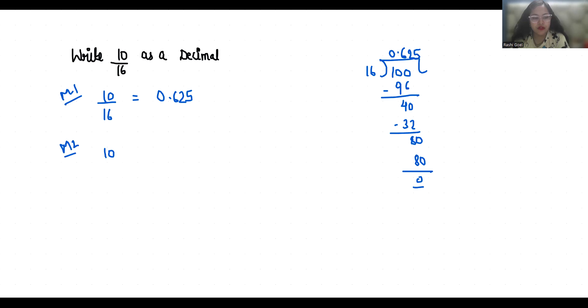First, I am going to reduce this fraction by dividing both numerator and denominator by 2. So it gives us 5 by 8. Now I am going to convert the denominator in terms of 10, 100, or 1000, 10,000 if possible.